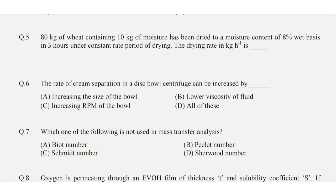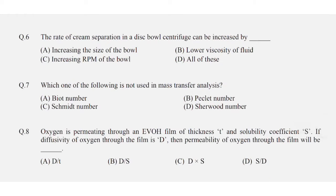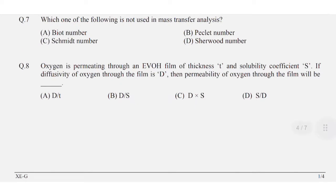Question number seven: which one of the following is not used in mass transfer analysis? Option A is correct: Biot number. For question number eight, oxygen is permeating through an EVOH film of thickness t and solubility coefficient S. If diffusivity of oxygen through the film is D, then permeability of oxygen through the film will be — option C is correct: D multiplied by S.